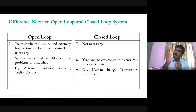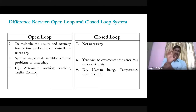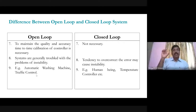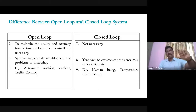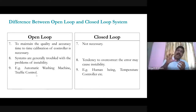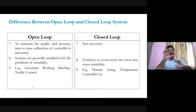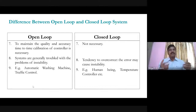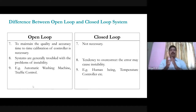Currently, traffic signals in cities are based on fixed time — red for two minutes, green for two minutes — without sensing actual traffic density, making it an open-loop system. But it can be made closed-loop by connecting cameras on all four sides: wherever there is more traffic, more time is given to that side, and wherever there is less traffic, less time is given. This is time optimization in a closed-loop traffic control system.